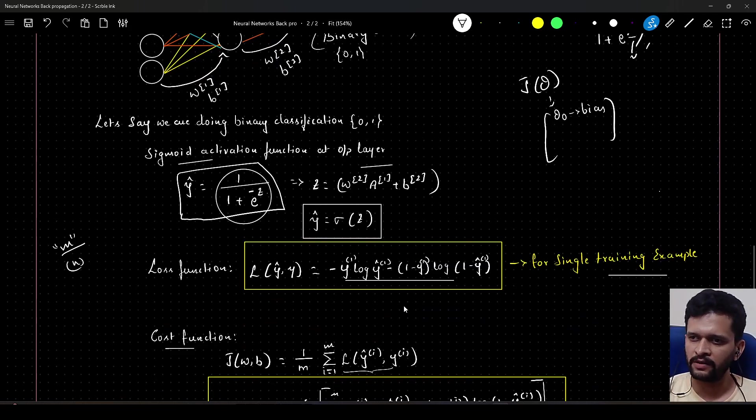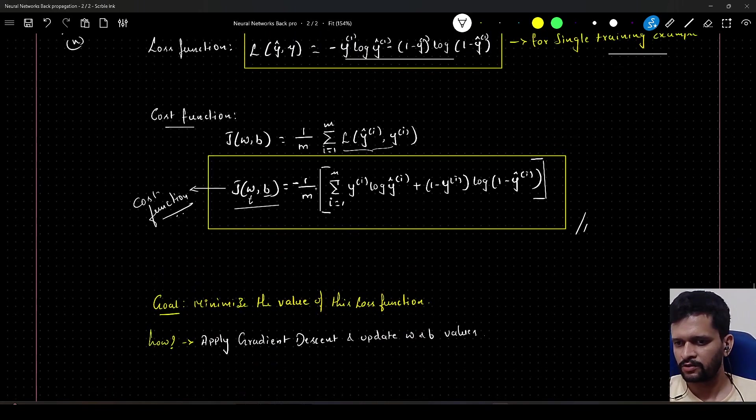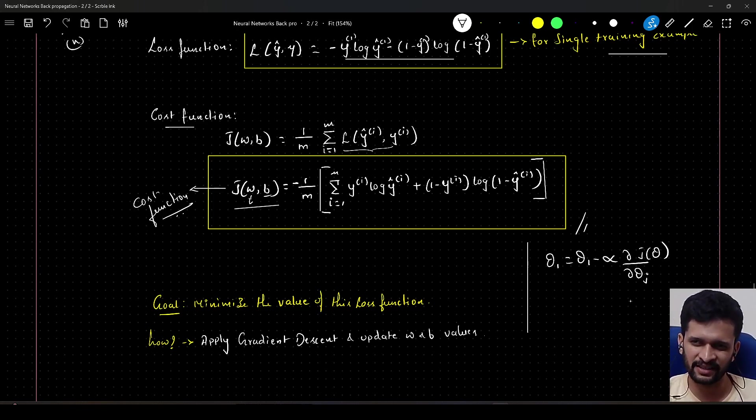In case of machine learning, we applied gradient descent. The update was theta 1 is equal to theta 1 minus alpha learning rate into d by d theta j of theta. This was the update for gradient descent. Like this, we will go till theta n, theta n minus alpha into d by d theta j of theta.